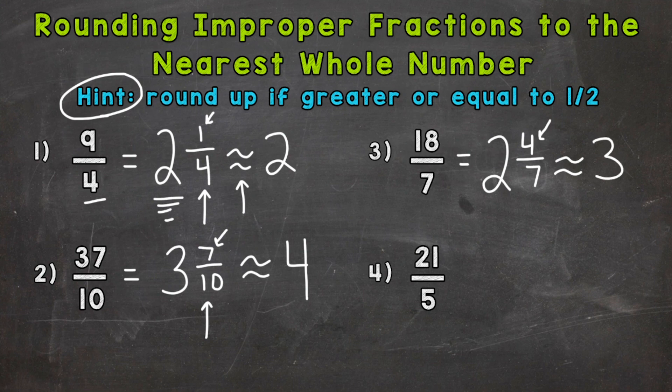And lastly, number 4, we have 21 fifths. So let's convert to a mixed number. How many whole groups of 5 out of 21? Well, 4. And we have 1 left over because 4 groups of 5 gets us to 20. We have a remainder of 1. Keep the denominator the same. And now we're ready to round.